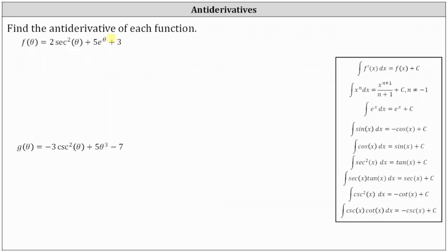The antiderivative of f of theta is equal to the indefinite integral of two secant squared theta plus five e to the power of theta plus three with respect to theta. We can determine the antiderivative using the antiderivative formulas shown here on the right, or equivalently evaluate the indefinite integral using the integral formulas on the right.